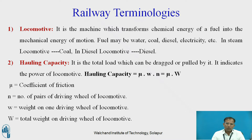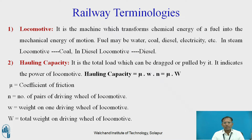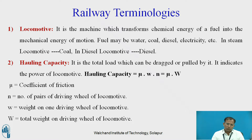In the last session, we have gone through the various train resistances. Before we go further, we understand the locomotive — locomotive is nothing but your engine, it may be a diesel engine or electrical engine. Hauling capacity is the total load coming on the driving wheels, or the total load hauled by the locomotive, and it indicates the power of the locomotive.